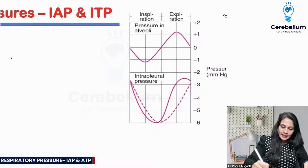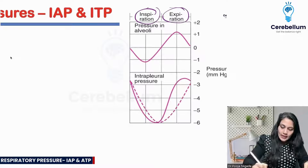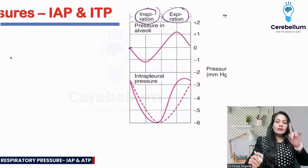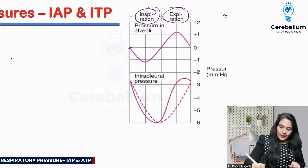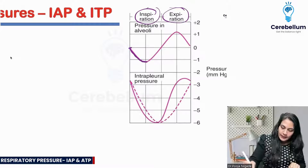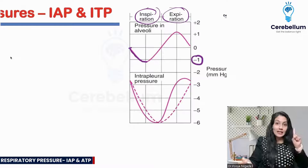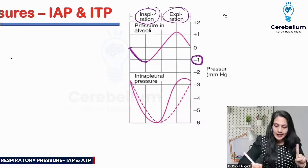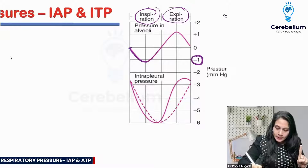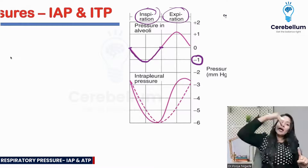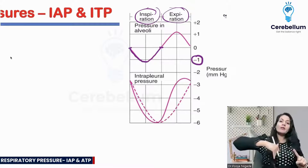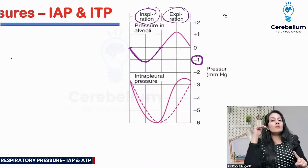This shows inspiration and expiration. During inspiration, you can see that the pressure is going negative — minus 1 mmHg, a suction pressure. And as soon as inspiration is over, air entry happens until the pressure becomes 0 again.